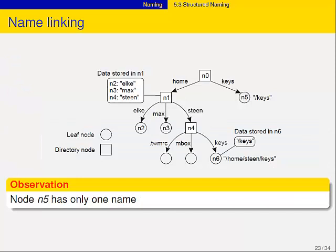A soft link is the following thing. You have your root over there, it points to this node, and this thing has keys in it. If you look at home/stain/keys — that's the name of that node — and it stores the name 'keys' in it. That's a soft link. You would resolve this path, read what is stored in that node to discover you took the wrong path, that you actually should have resolved this name, which starts at the root again, and then you get to keys.